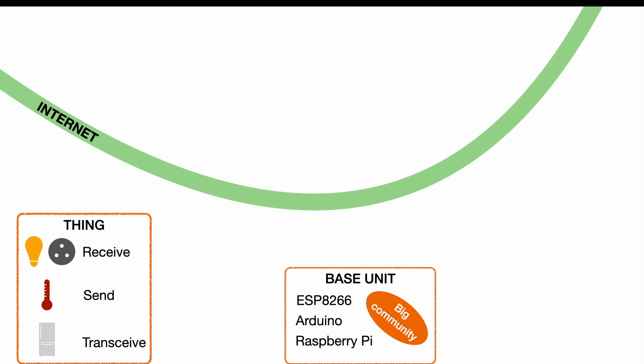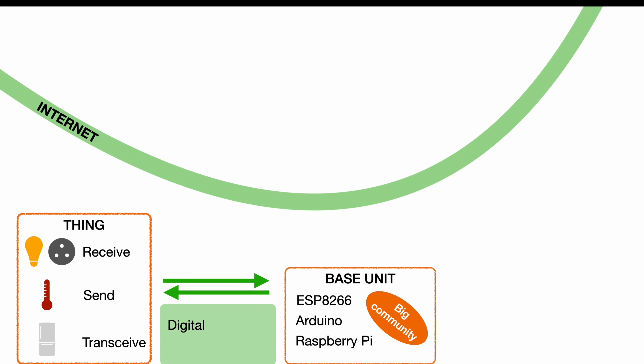So no need to write every piece of code by yourself. But to communicate from our thing to our base unit and vice versa, we need to use some kind of signal or protocol. Basically we have the choice between digital and analog communication. While an analog signal is simply a voltage level or current, digital communication can capitalize on a bus system like one-wire or I2C. If you're more interested in those communication protocols, check out one of our other videos.